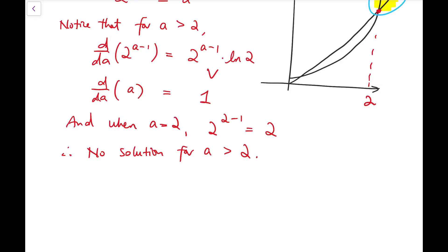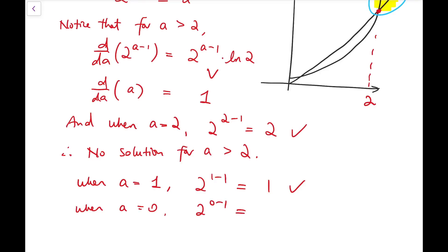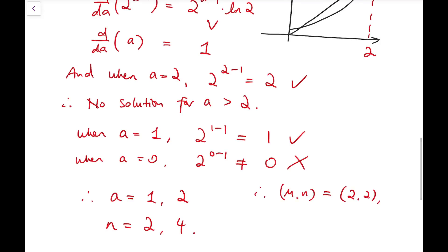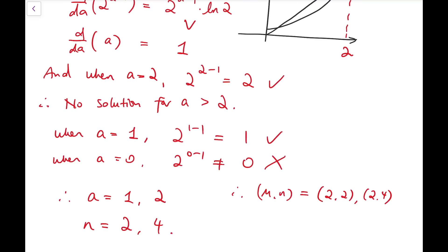It remains to check a equals 1 and a equals 0. When a equals 1, 2 to the 1 minus 1 equals 1, which works. When a equals 0, 2 to the 0 minus 1 is not equal to 0, so no solution. Therefore a equals 1 and 2, giving n equals 2 to the power a, which is 2 and 4. So m and n can be (2, 2) or (2, 4). We reject (2, 2) because they must be unequal. So (2, 4) is a solution, and by symmetry (4, 2) as well. These are the only solutions for the positive case.